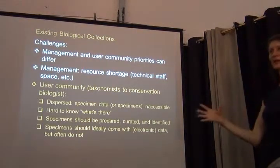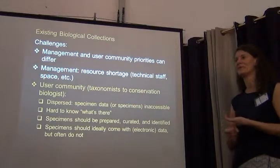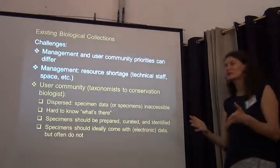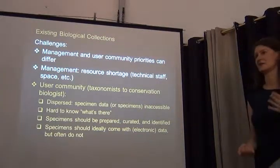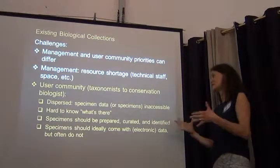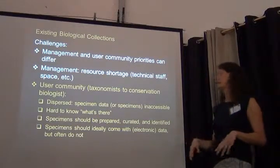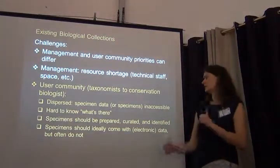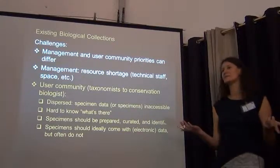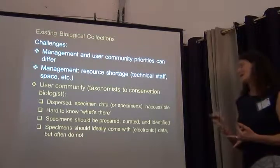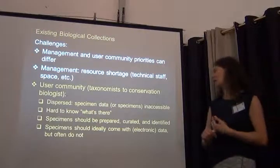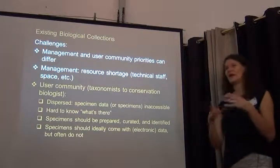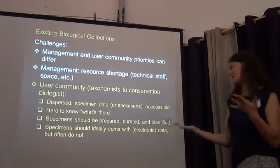Challenges for museums can be looked at from two sides: the management side and the user community side. From the management side, one of the big problems globally is resource shortage — not enough technical staff, not enough space, not enough insect cases. From the user community side — and that community ranges from taxonomists to conservation biologists — our complaints include that collections are dispersed, meaning specimen data and specimens are inaccessible and it's hard to know what's out there. We also expect specimens to be prepared, curated, and identified, and ideally to already have electronic data so we don't have to recapture it.